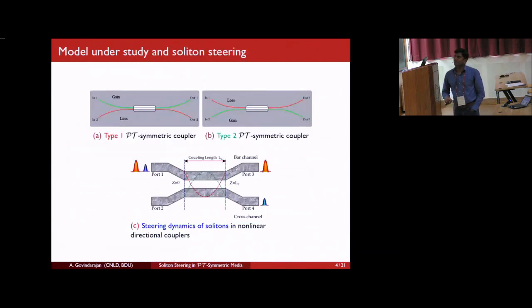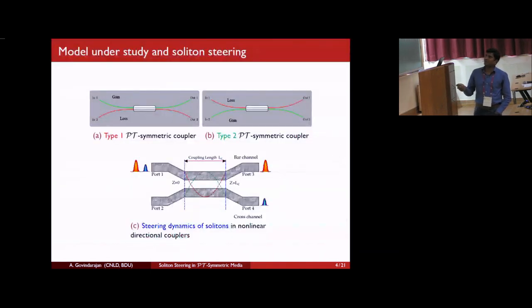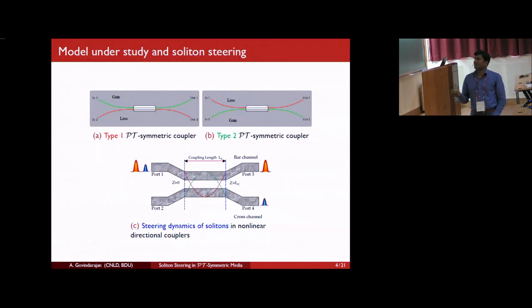For this study, we have considered two sorts of fiber couplers. Where you can find that in type 1, we retain the same PT-symmetry configuration. In type 2, the PT-symmetry configuration has been reversed. Apparently, these models look simple, but they exhibit some richer dynamics, which will be seen in the forthcoming slides. The bottom figure represents a schematic sketch of soliton steering, where we observe that the soliton pulses, which we would like to steer between the two adjacent waveguides, is injected in any one of the ports. And due to the evanescent coupling, these pulses are transferred at the output ports.